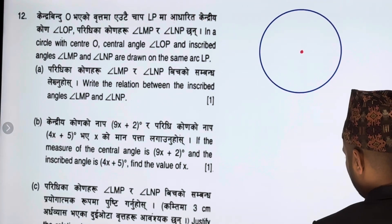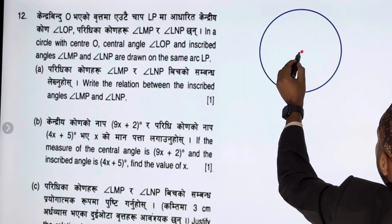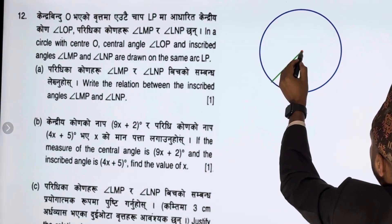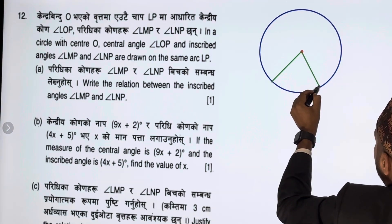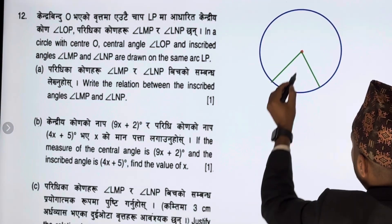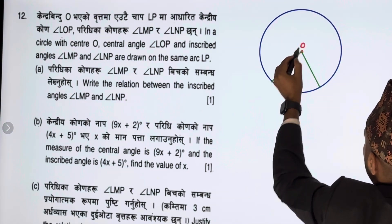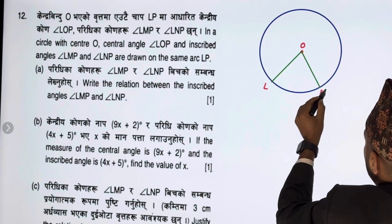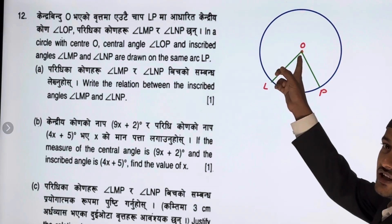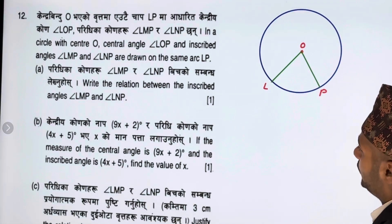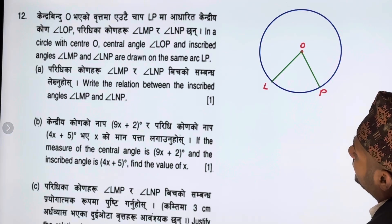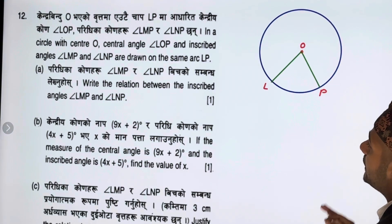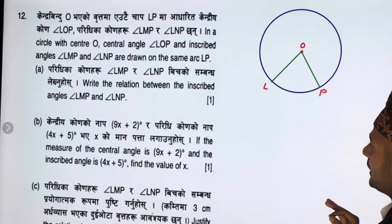I will draw this line connecting the points. This line is called O, L, P. This line is called the central angle. The line through point M is called the inscribed angle.